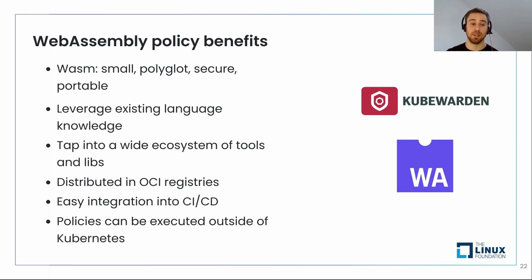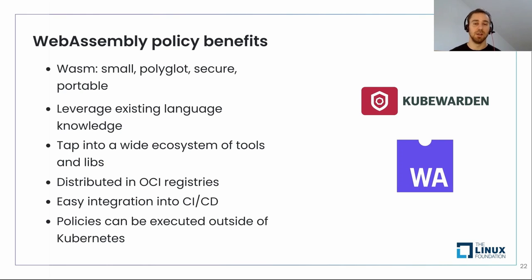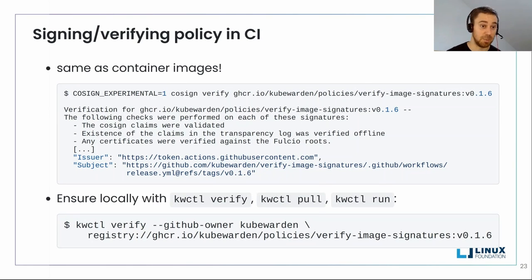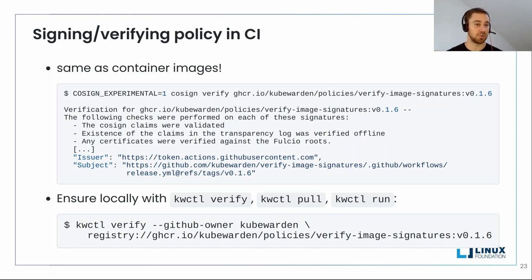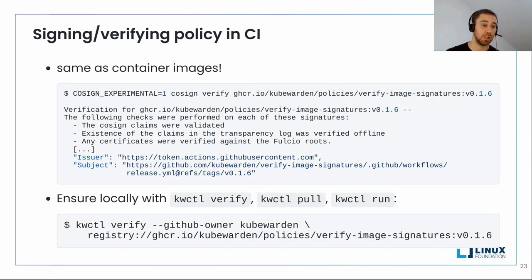Back to how we sign and verify a policy. Since policies are WASM modules with first-class support in OCI registries — same as container images — we use cosign sign and cosign verify, just as my colleague Raúl explained for container images. We can see an example of cosign verify here — it's a keyless one, providing the issuer and subject. You can also do it locally using the kwctl tool, which allows verifying the policy locally, running the policy locally, or pulling it locally. Where do we find policies? In the Kubewarden hub at hub.kubewarden.io, where you can see if policies are signed via Sigstore. Kubewarden is also a CNCF project, so we're present in artifacthub.io — policies signed with Sigstore have a 'signed' tick there.